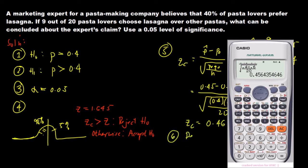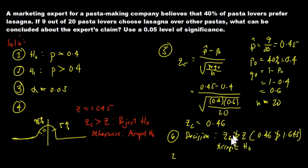Now for our decision. Our Z computed is not greater than our critical Z. If we compare the numerical values, our computed Z is 0.46, which is not greater than 1.645. Therefore, our decision will be to accept our null hypothesis.